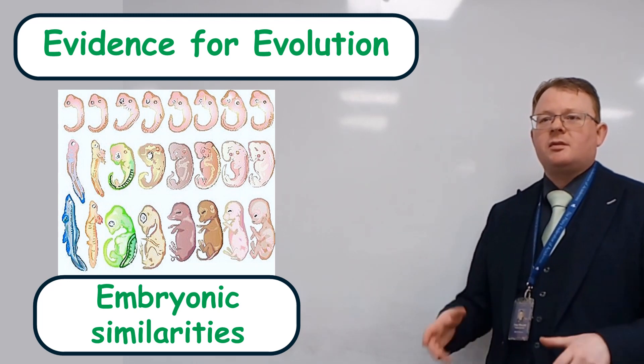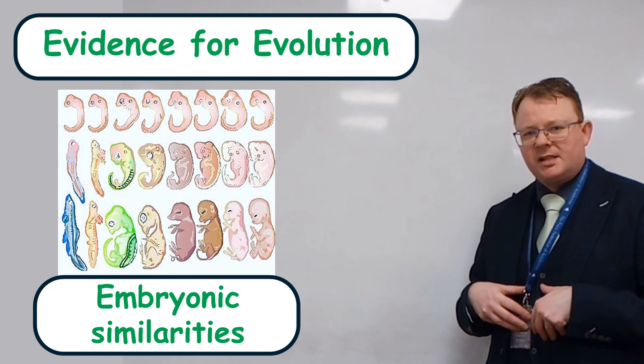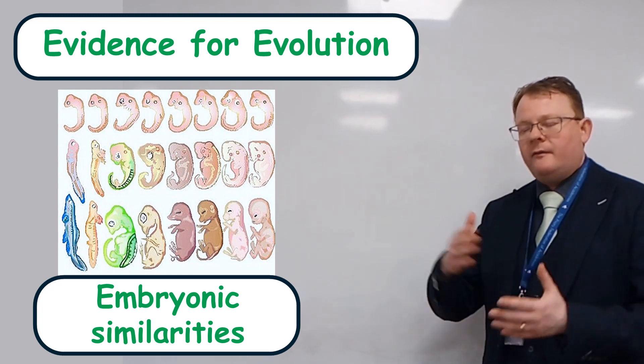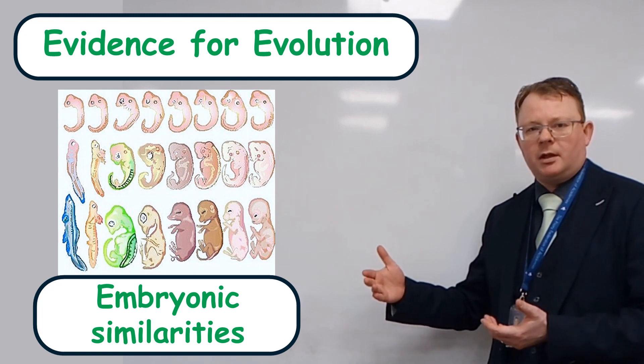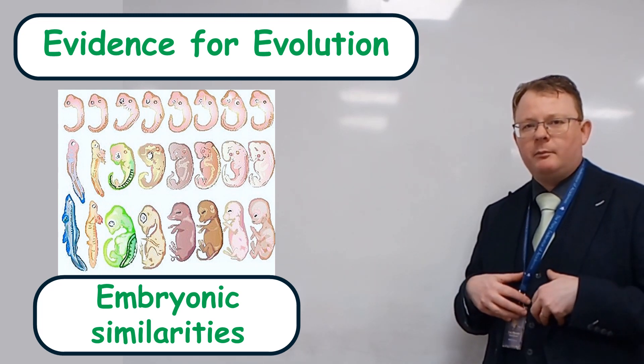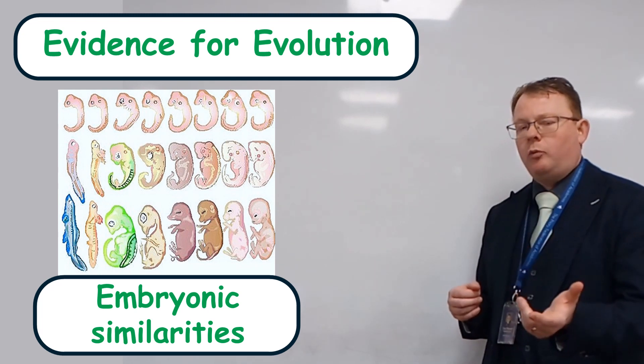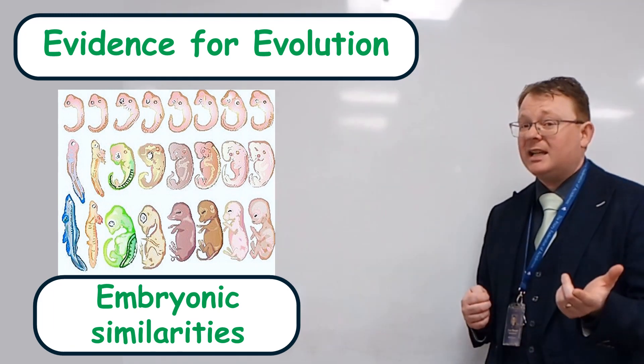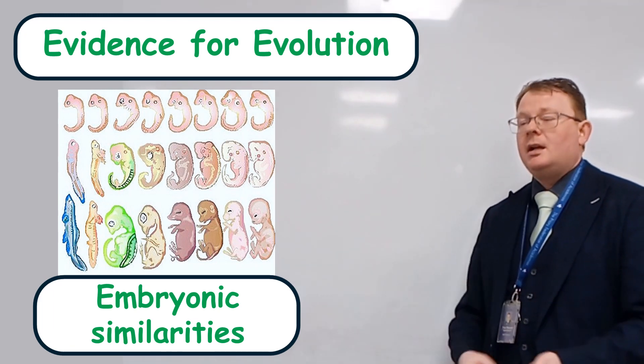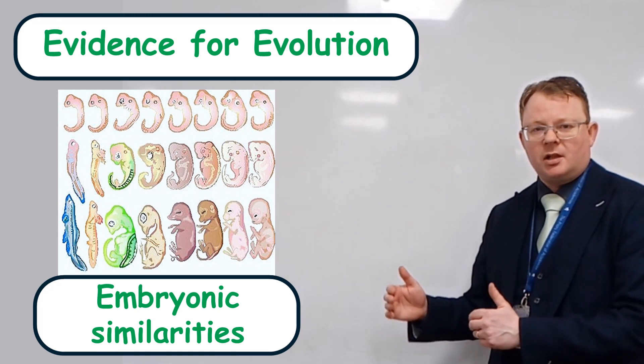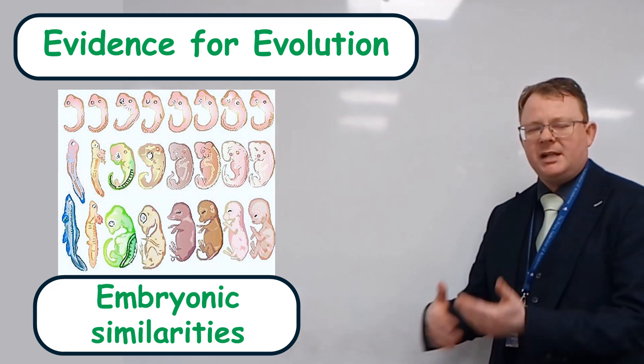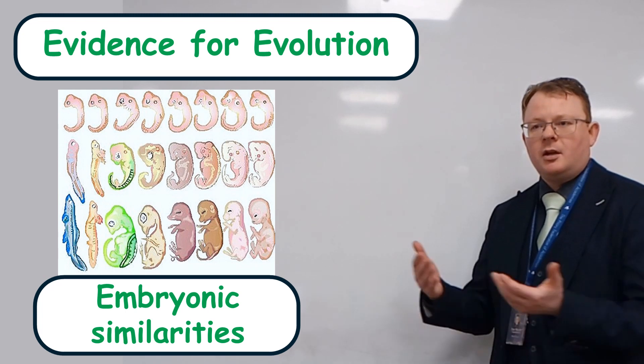We can go and look at developing fetuses, or developing embryos, and at various stages of that development they look very similar. So if you look at a developing embryo of a human, at one point it looks a little bit like an insect. At another point, it looks very similar to a dolphin at that same stage. So there's all sorts of pieces of evidence of evolution that you need to know about.